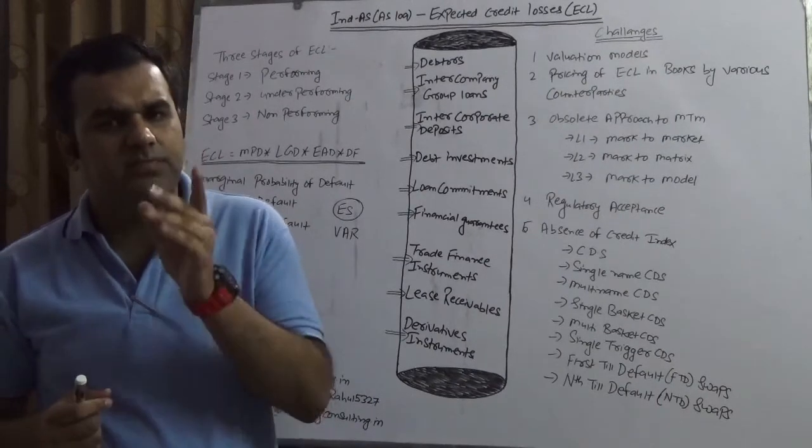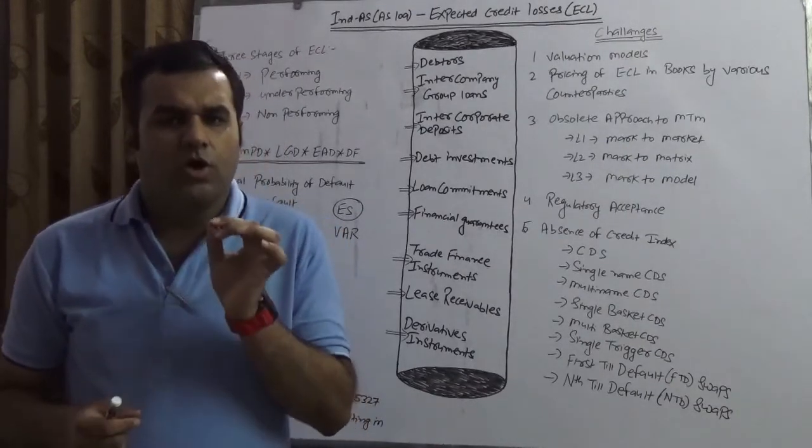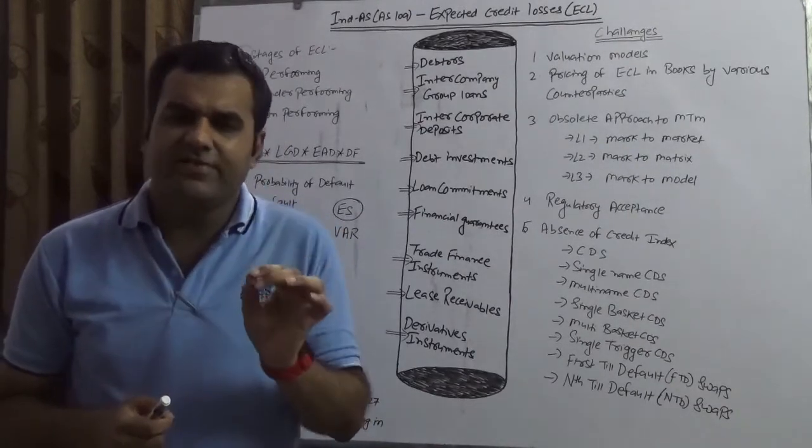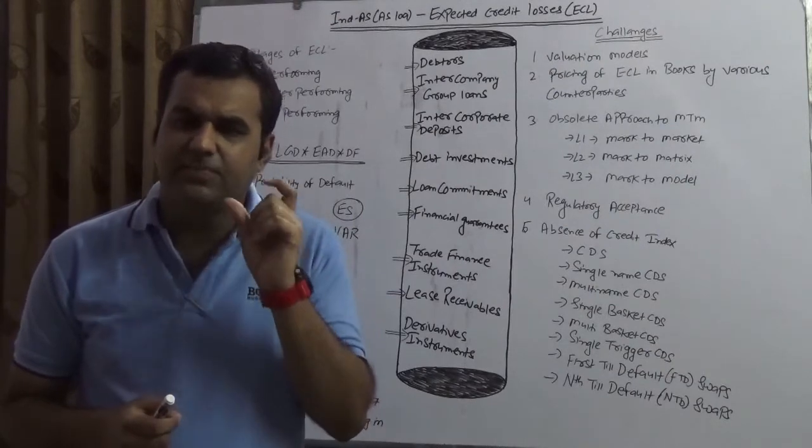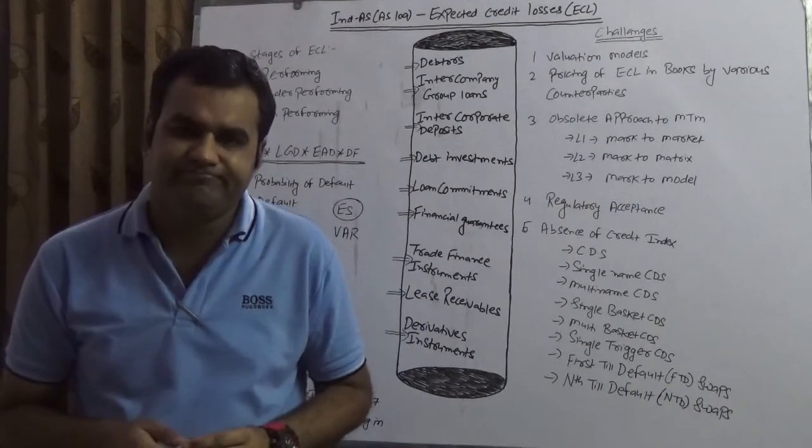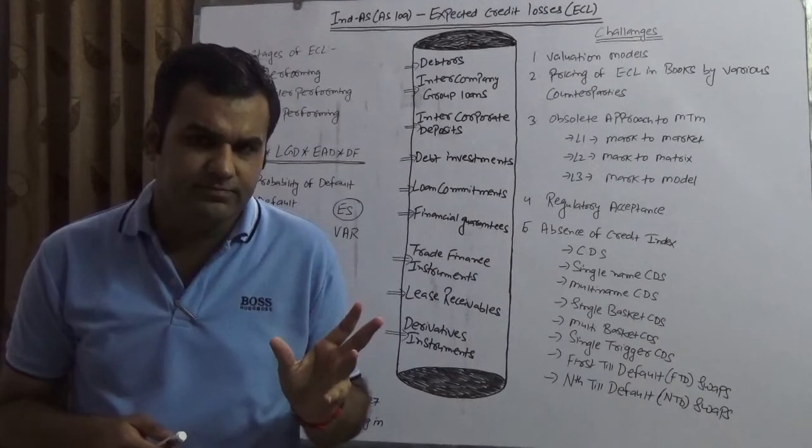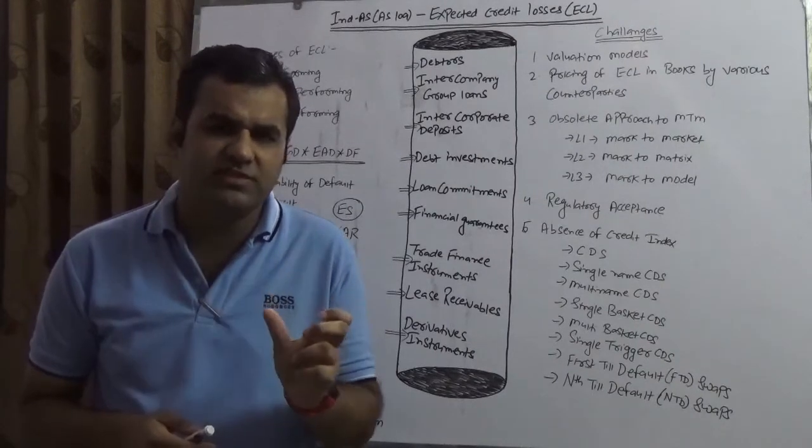If you don't trust me, please visit www.goldmansachs.com, their website. Open their financial statement. In their financial statement you will get a section which is Pillar 3. In this Pillar 3 you will see Expected Shortfall. Of course you will see VAR also, but you will never see ECL.